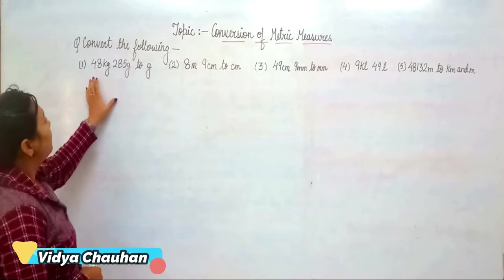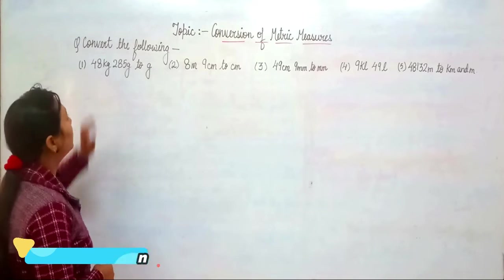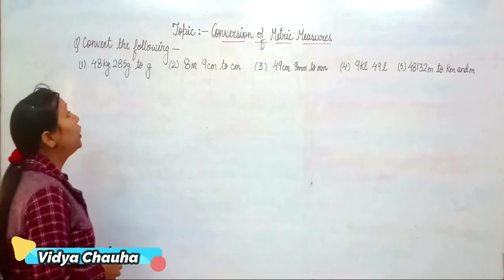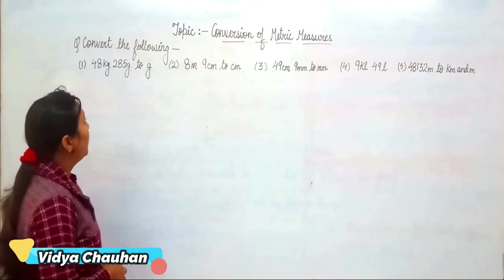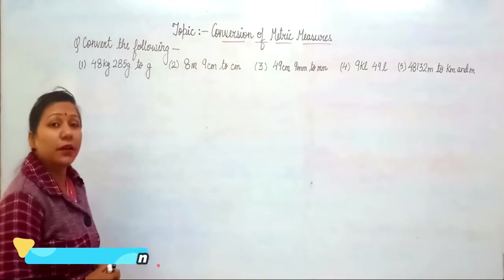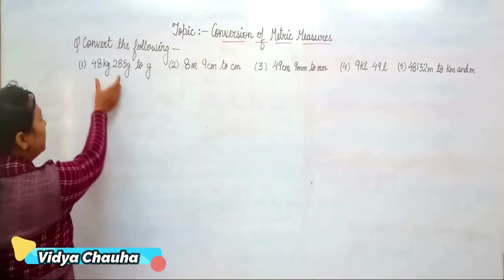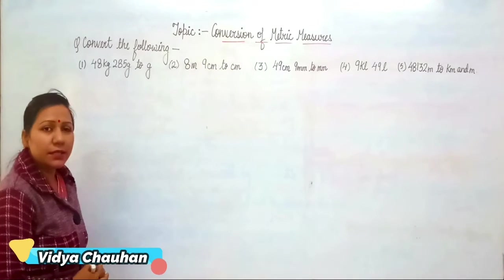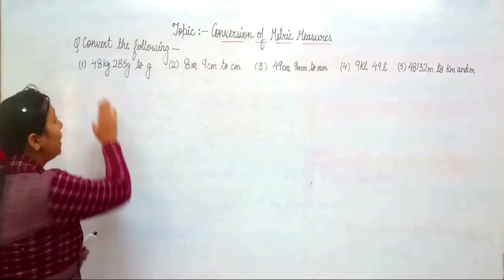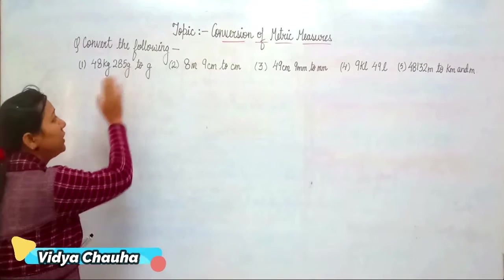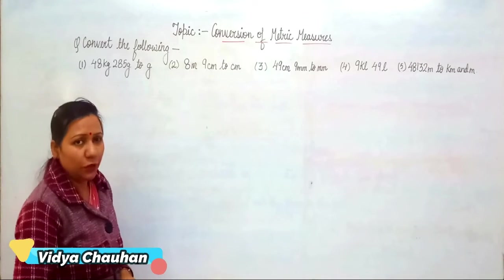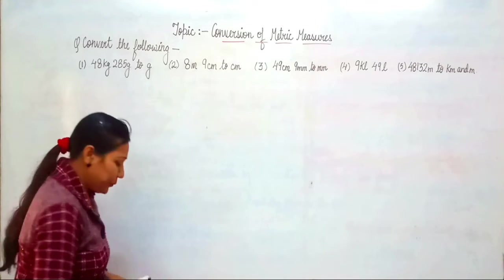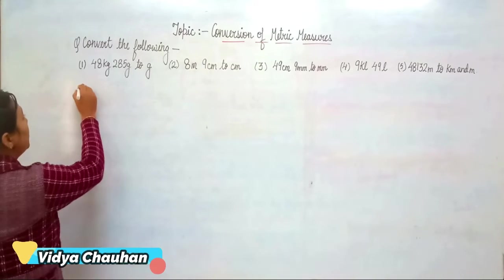The first question says we have to convert 48 kg 285 grams into grams. The question is given to us in both kg and grams, and we have to convert it into grams only. So for that, the solution will begin like this.